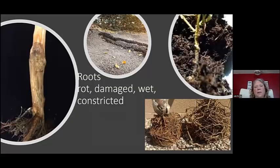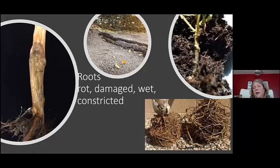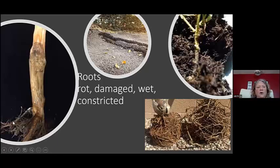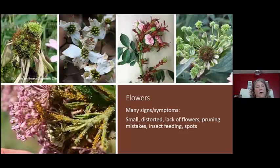Roots can be damaged by root rot, wet areas, or constriction. These roots are obviously constricted in the pot — you can free them by cutting some and spreading them out in the planting hole. Fungus gnats appear in containers where roots are too wet and you're watering too frequently. Constructions and additions of asphalt or any structure in your yard can damage roots. Signs of root rot include odor and being able to slough off the outer sheath of the roots.